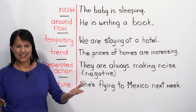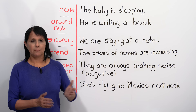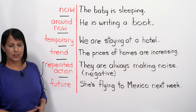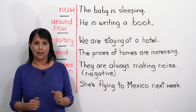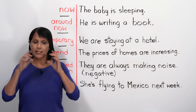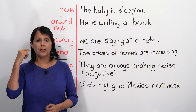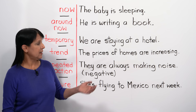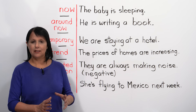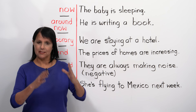We can also say 'He's working on a project' — maybe the project will take one week or one year, but it's happening around now. Next, we can use it to talk about something temporary — not something that happens all the time. For example, 'We are staying at a hotel.' We live in our home — that's permanent — but right now, while we're traveling, we are staying at a hotel. That's something temporary.